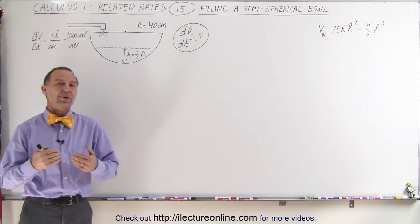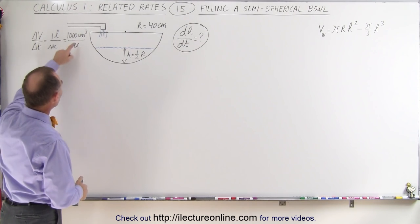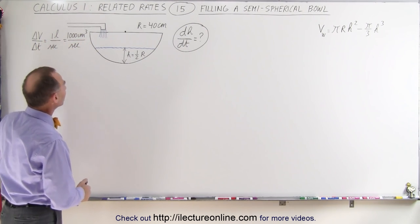Welcome to ElectronLine. Here we're going to fill a semi-spherical bowl with water at a rate of 1,000 cubic centimeters per second, which is 1 liter per second.